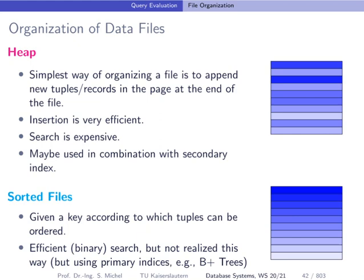We have previously seen what pages are and that records are stored in pages on disk. If you look at files which consist of many pages, there are multiple ways to write data into these files or pages. The easiest way is using a heap, which is basically an unorganized file that does not follow any sorting order. It's just a set of records stored in pages, and whenever a page is full we create a new page, appending data into the file. The different shades of blue indicate different values — for instance a name or matriculation number — and you can see there is no order here.